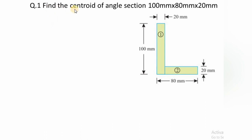Our first problem: find the centroid of an angle section with dimensions 100 mm × 80 mm × 20 mm, meaning one leg is 100 mm, the other is 80 mm, and the thickness is 20 mm. To find x̄ and ȳ, we first consider the axis of reference — the left-hand side for x̄ and the lowest point for ȳ. We divide the total L-section into two individual rectangles: Rectangle 1 is this part and Rectangle 2 is this part.